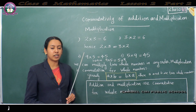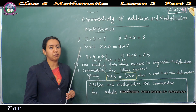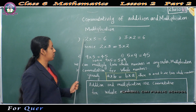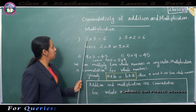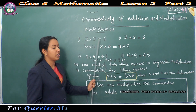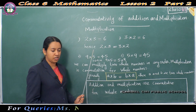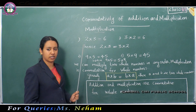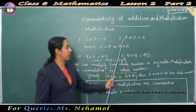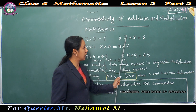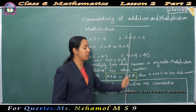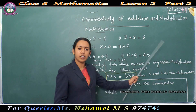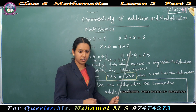Now, consider the multiplication of whole numbers. First one: 2 into 3 is equal to 6 — 2 3's are 6. Then, 3 into 2 is equal to 6 — 3 2's are 6.